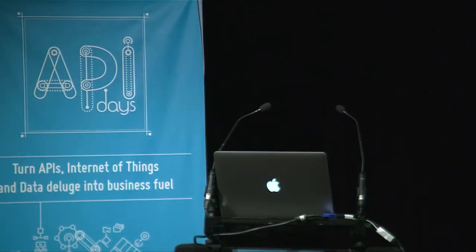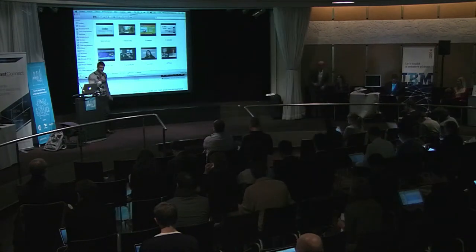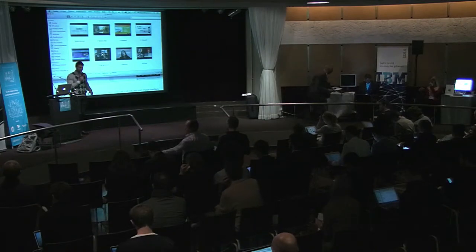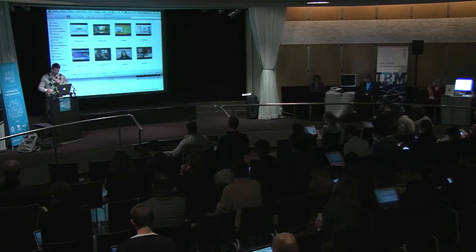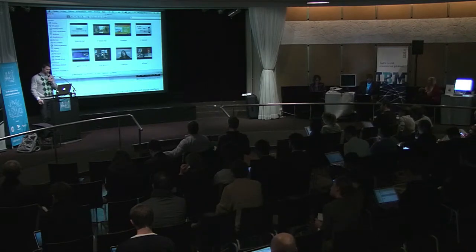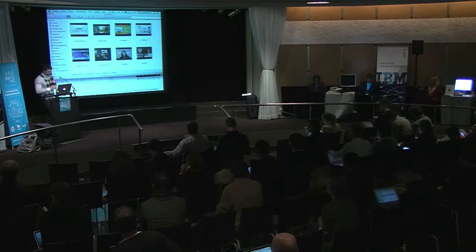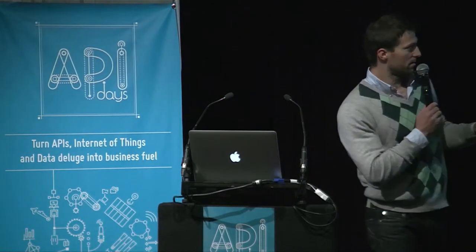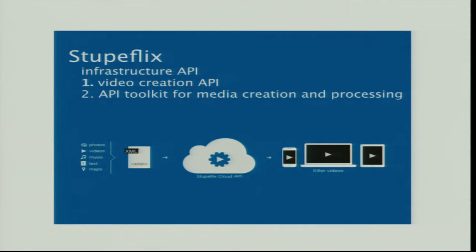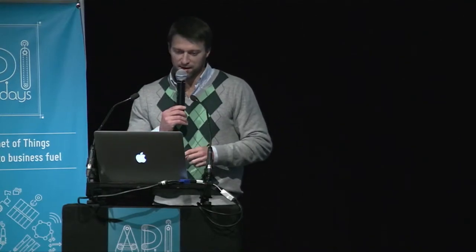So first, in a few seconds, I'll explain what Stupidflix is because an API to create video is not a very common thing, so I'll show you a few examples. Basically, using the Stupidflix API, you can create video automatically at a large scale using photos, videos, music, text, maps — any kind of media. So you submit all of those to our API, and in a few seconds we create a video based on your template, on complex scenes or animations that you would have described beforehand.